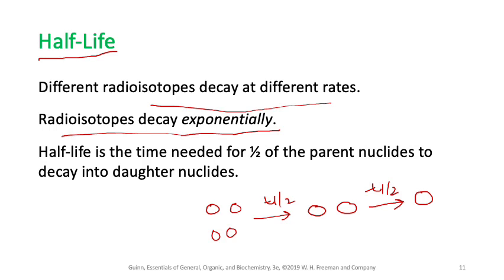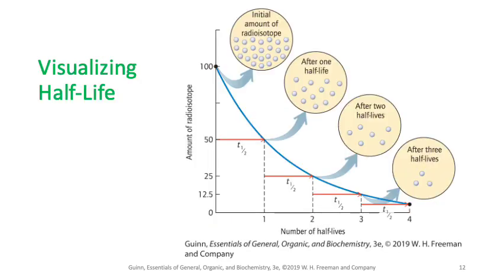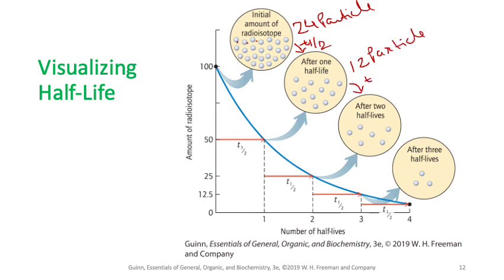Let's visualize half-life: start with 24 particles. After one half-life (t½), 12 particles remain. After another half-life, 6 remain. After another, 3 remain. After each half-life, you have half the number you started with. This is how half-life is defined.